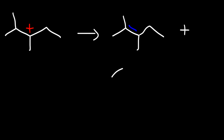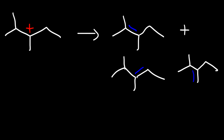Here are the three possible alkene products. Which is the major product — which is the most stable alkene? The most stable alkene is typically called the Zaitsev product; the least stable is usually associated with the Hofmann product. We need to determine which alkene has the greatest number of R groups. This alkene has three R groups, the one on the right has two R groups, and the one on top has four R groups — it is a tetrasubstituted alkene and is the most stable. Therefore, this is the major product.